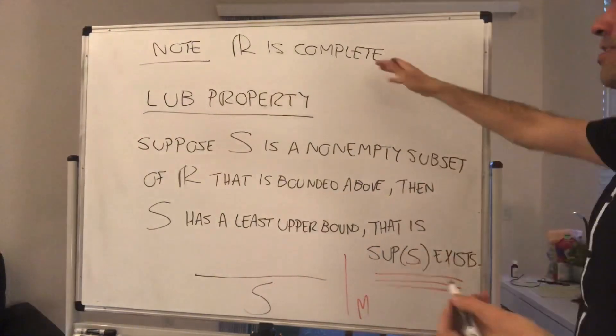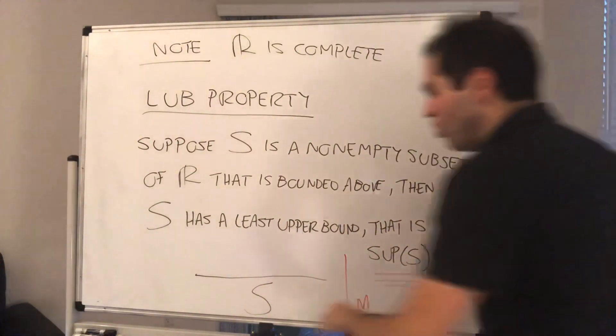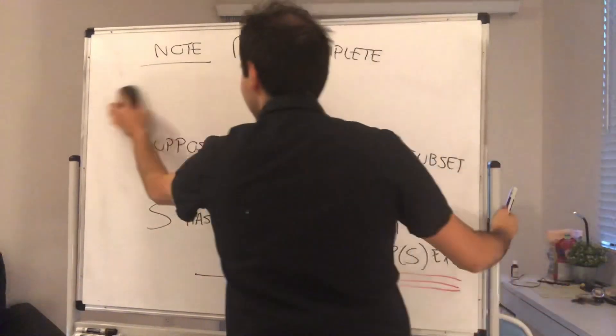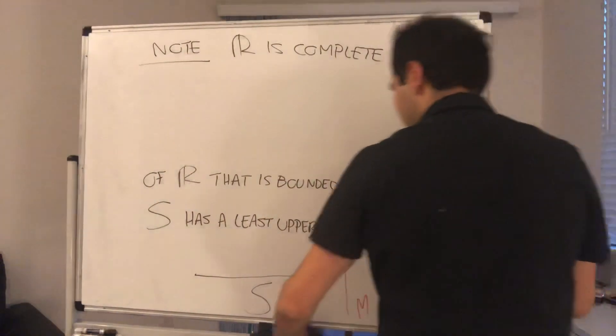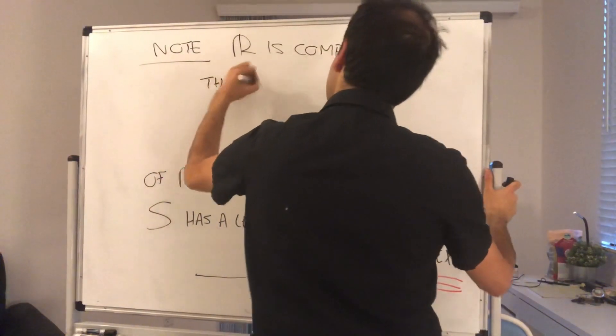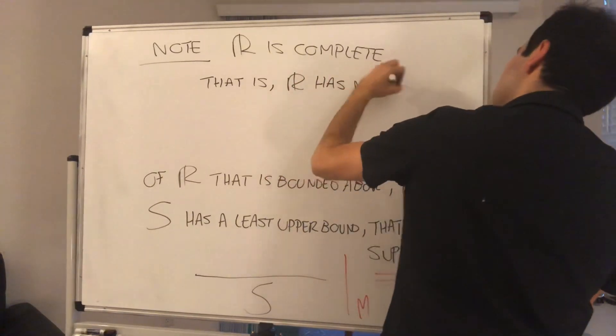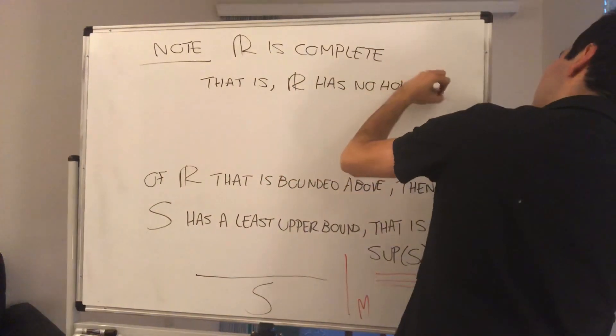And geometrically, what is this saying? It says that R actually doesn't have any holes or any gaps. And let me explain this in more detail. That is, R has no holes or gaps.